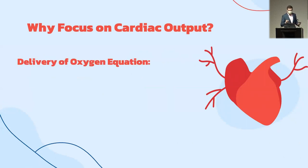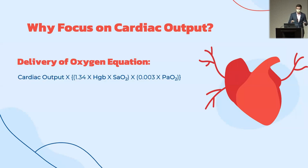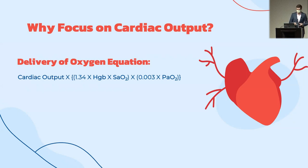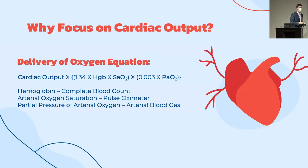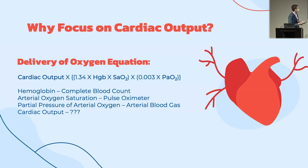We think back to the oxygen delivery equation: cardiac output × 1.34 × hemoglobin × arterial oxygen saturation, plus the PaO2 component. Hemoglobin is easy — just draw a CBC. Arterial oxygen saturation is even easier — almost everyone in the ICU has a pulse oximeter. Partial pressure of arterial oxygen requires an ABG, but still not too bad. But cardiac output is much more difficult to measure.